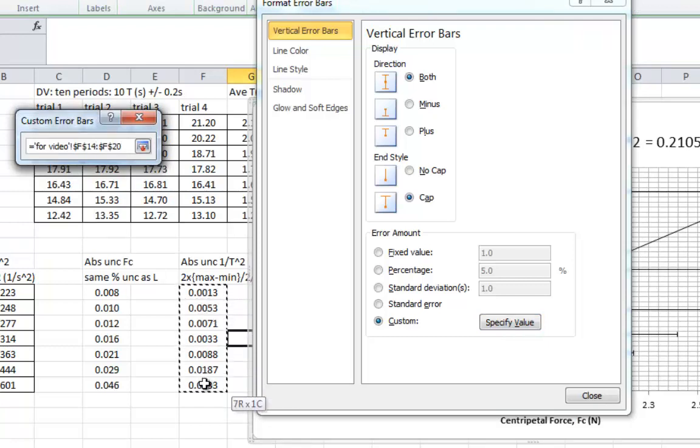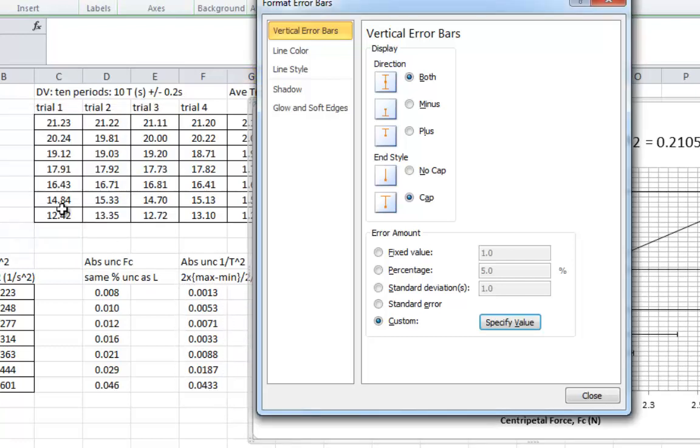And positive error bars. We want these numbers. Just highlight them. Click this little thing here. And for the negative value, you click that there. And you highlight those numbers. Okay. Close this.